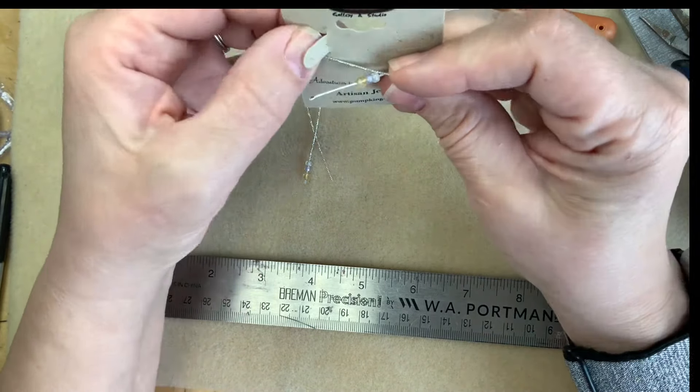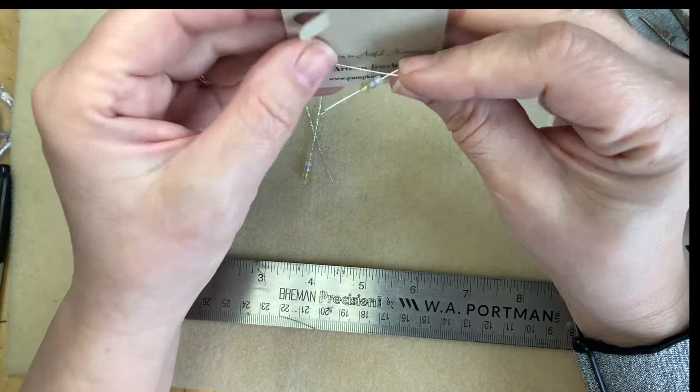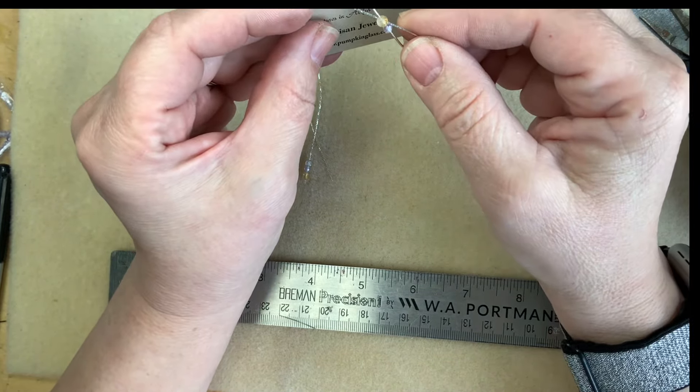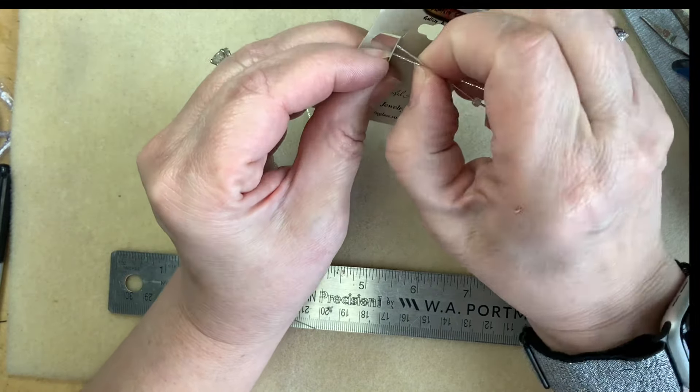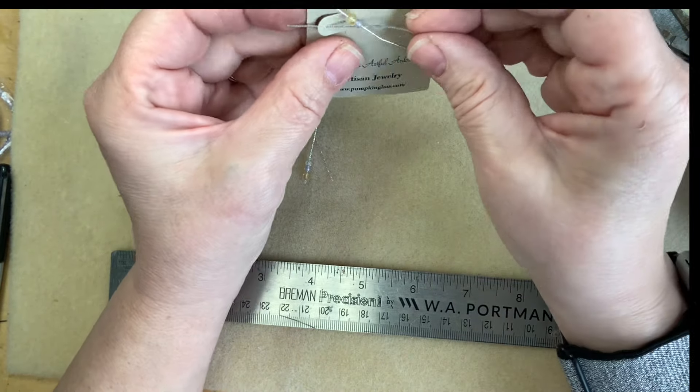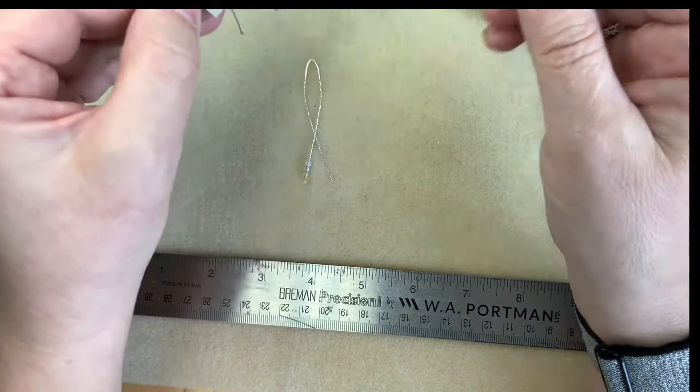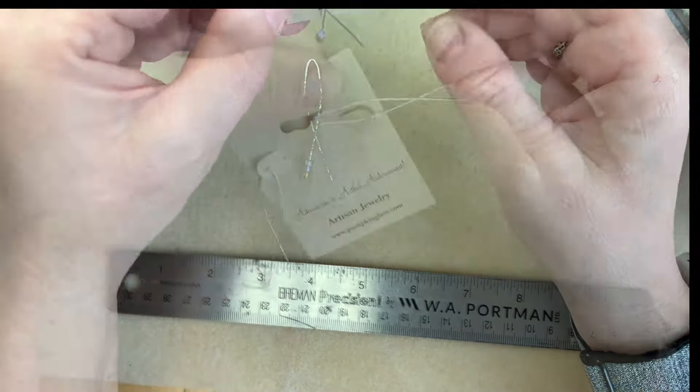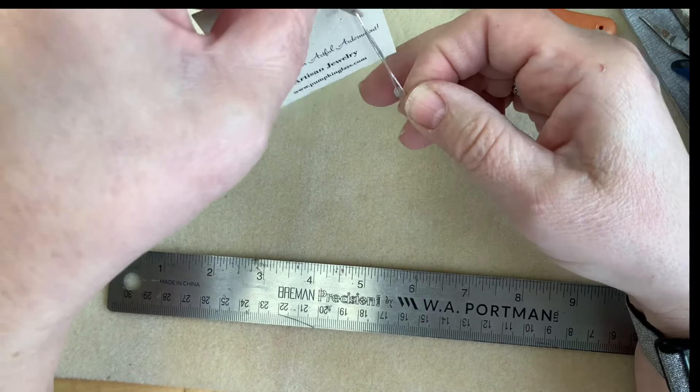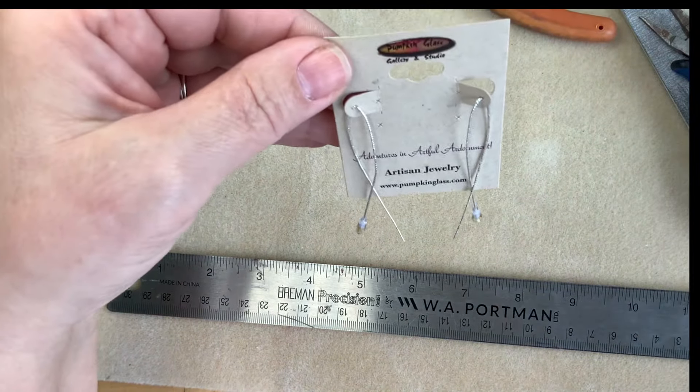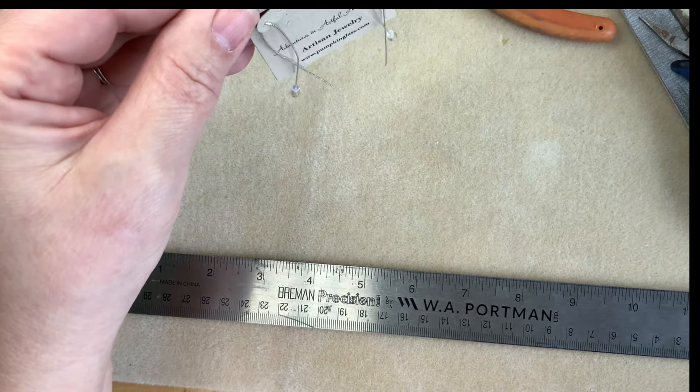You're going to thread this through in the front and slide it around. There's one side. And then just keep pulling that same tail through. And you'll have your earrings.